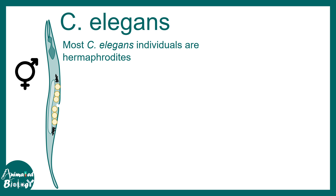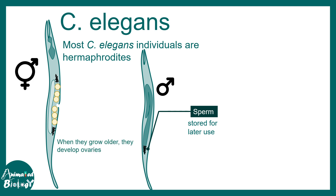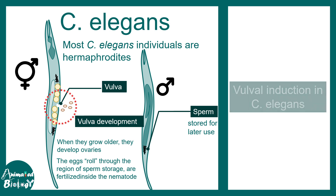C. elegans are actually hermaphrodites. That means they have male and female characteristics in the same body. But initially they are not hermaphrodite — at the early stage of their life they are males and they have sperms. Eventually these sperms are stored for later use. When it grows older it develops ovaries. Eventually the eggs can trickle down to that sperm and be fertilized inside the nematode. Once fertilized, the egg would eventually be released from a region known as the vulva and these eggs are laid outside. So this is the function of the vulva, and we would be talking about the development and the induction of vulva in C. elegans.